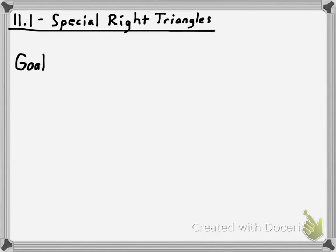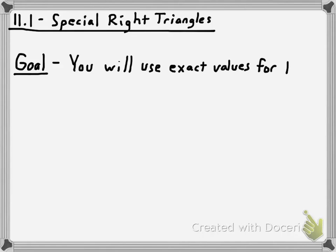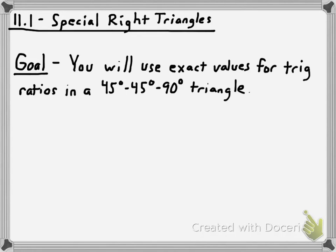Hey, what's going on everybody. Special right triangles is the topic for this video and the next two videos. In this one in particular we're going to work with 45-45-90 degree triangles. The goal is that you will use exact values for trig ratios in a 45-45-90 degree triangle. The next video will look at 30-60-90 degree triangles and the trig ratios for those.